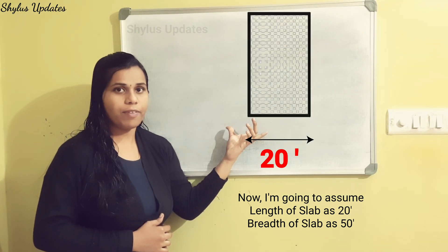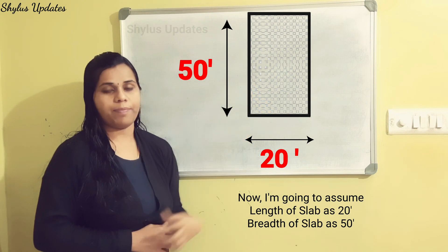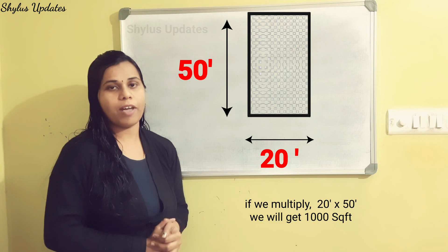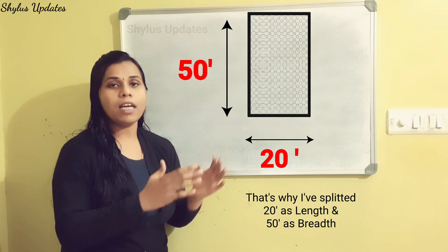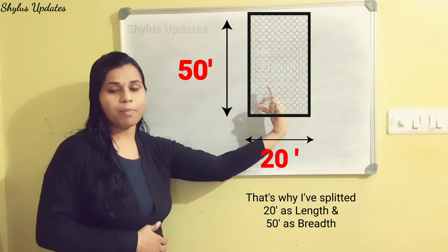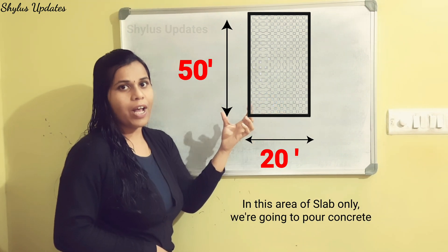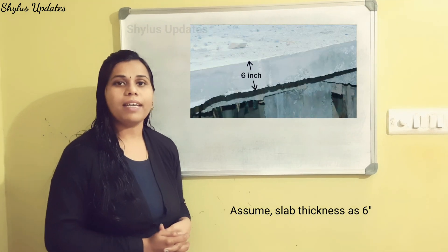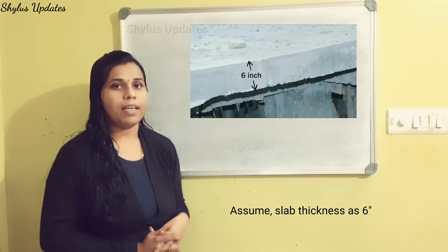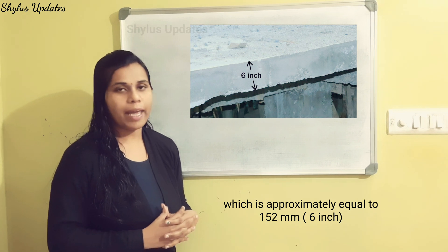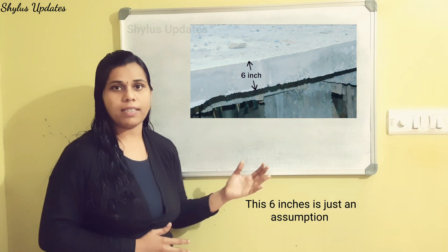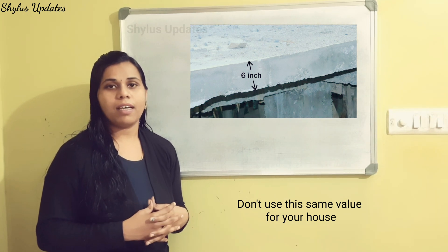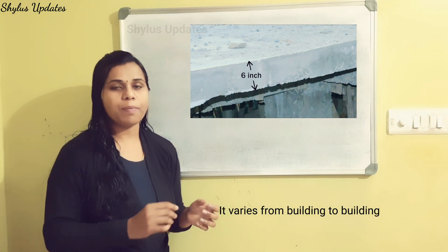I am going to assume the length of the slab is 20 feet and the breadth of the slab is 50 feet. If we multiply 20 feet by 50 feet, we will get 1000 square feet. In this area of slab, we are going to pour concrete. Assume slab thickness as 6 inches, which is approximately equal to 152mm.